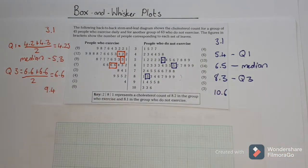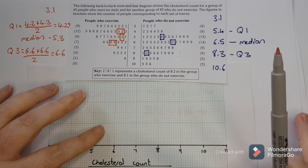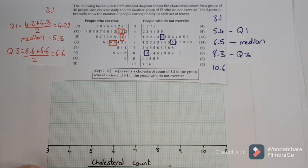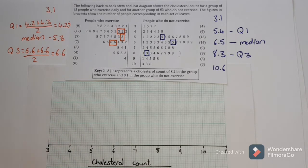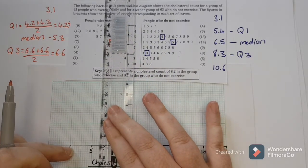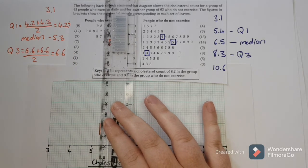So now I know exactly what I'm looking for on the graph to draw. I take my graph paper and draw my grid line across, going up in ones because I'm only going from 3 up to 10.6 — so evenly up in ones from 3 to 11. I've labeled it because this is now the cholesterol count. We can start by drawing our first box and whisker from this side, starting with the median registered as 5.3. At 5.3 I draw a straight line.